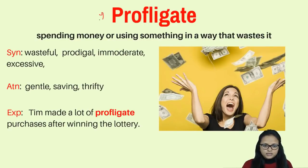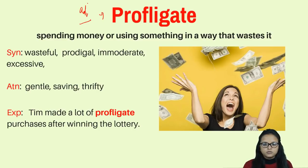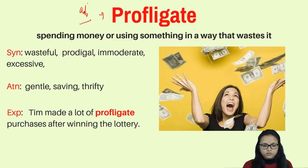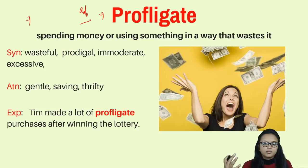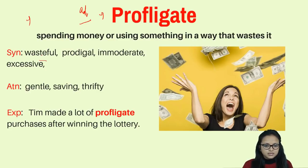The second word is 'profligate.' Profligate is an adjective for a person who does not spend money wisely — spending it recklessly without considering what happens when the money runs out. We also use profligate when referring to people who use resources unwisely, like not caring about running water or polluting the air. Profligate means wasteful — a person who wastes money or resources.